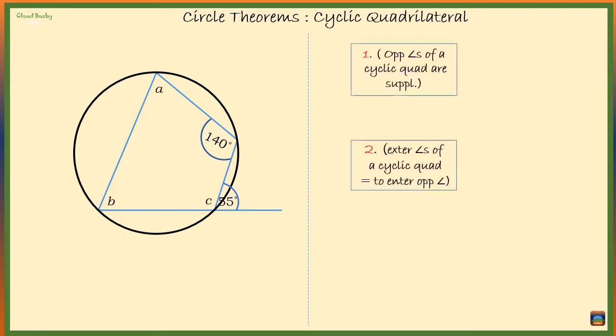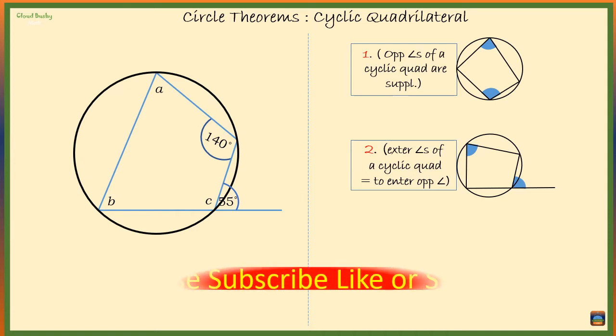There are two theorems that can help us when we are dealing with a cyclic quadrilateral. Opposite angles in a cyclic quadrilateral are supplementary, and the second one, the exterior angle of a cyclic quadrilateral is equal to the interior opposite angle.